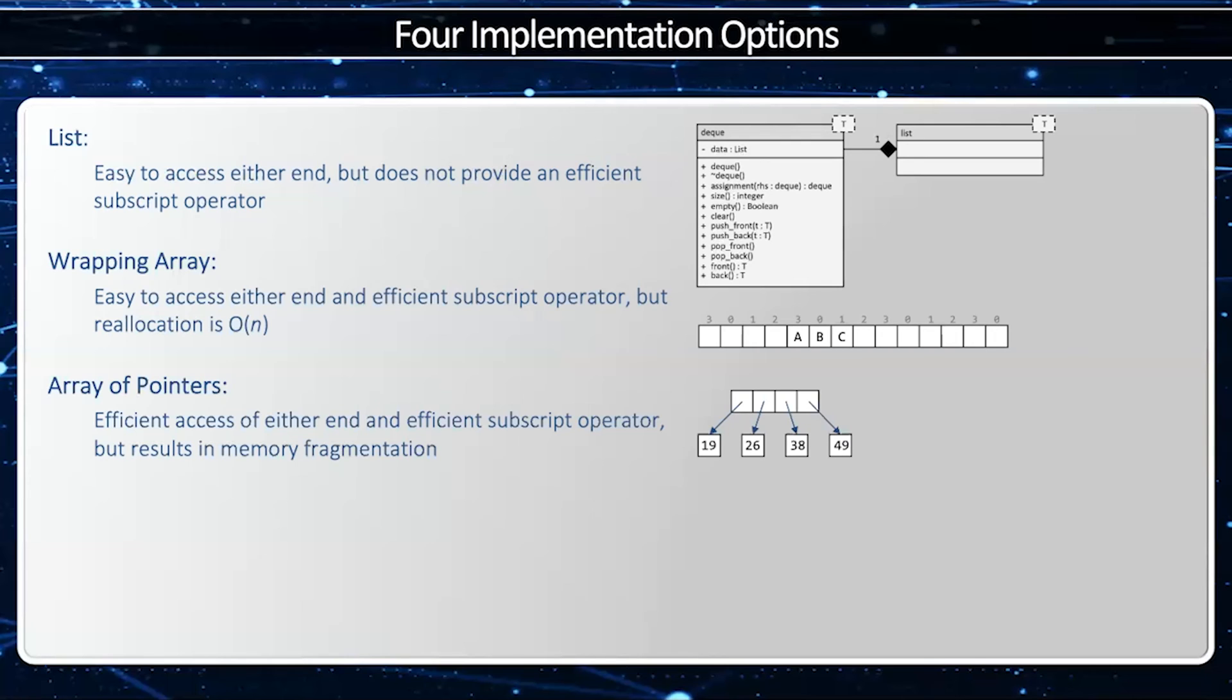It's O(1) for the square bracket operator, O(1) push back and push front and pop back and pop front. And all these, what we desire to have for the deque, but there is one problem, memory fragmentation. Because we have a whole bunch of very small allocations, one for each element, we don't make a very effective use of memory.